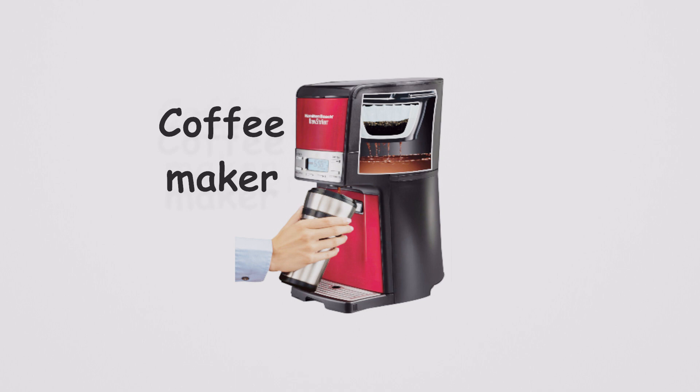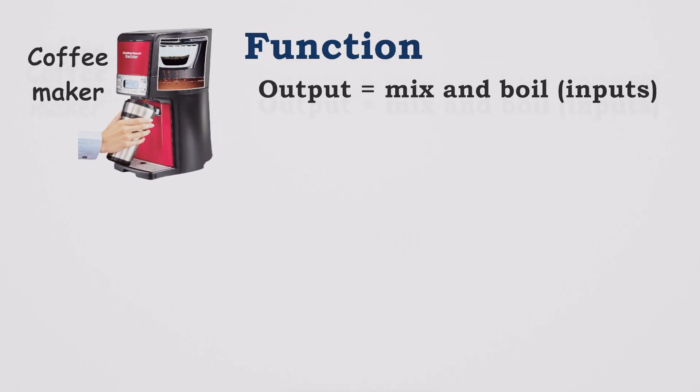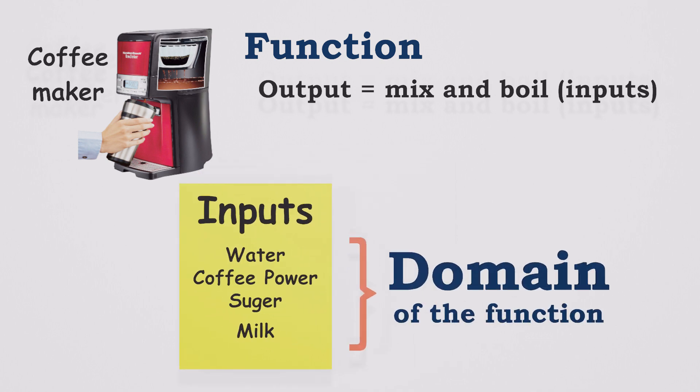Let's again talk about the coffee machine. Remember, our coffee machine only takes specific inputs: water, coffee powder, sugar, and milk. Anything else, like fruit juice, could result in breaking the machine. So we must define the allowable inputs to the machine, and that's what we call the domain of the function.